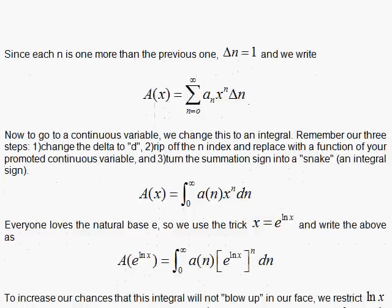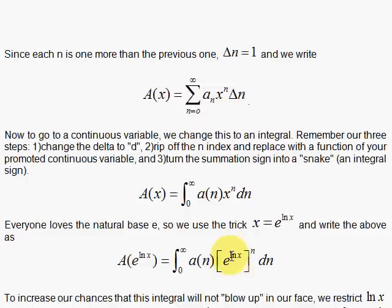Here's where we use this trick: x is equal to e to the natural log of x. If you take the natural log of both sides, you get the natural log of x, and the natural log of x comes down multiplying the natural log of e, which is 1. So this is a true statement. We substitute that in at the two places, and we see immediately that to encourage our integral to be finite, we would like the natural log of x to be restricted to negative values.